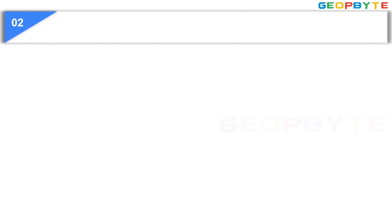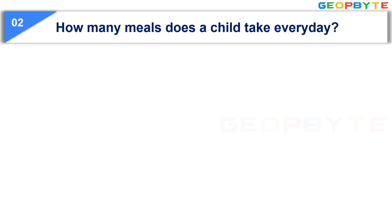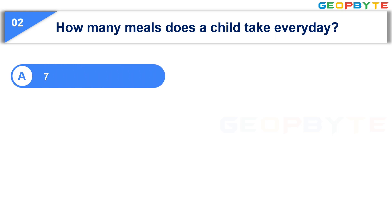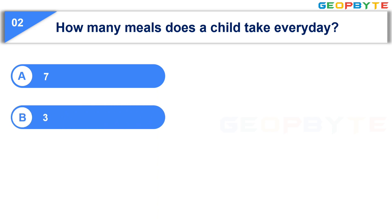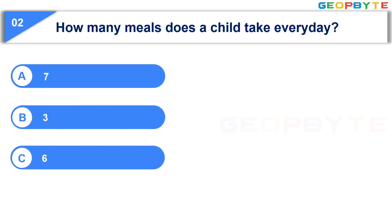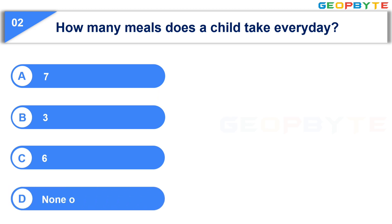Moving to the second question: How many meals does a child take every day? Option A: 7. Option B: 3. Option C: 6. Option D: None of the above. Your time starts now.